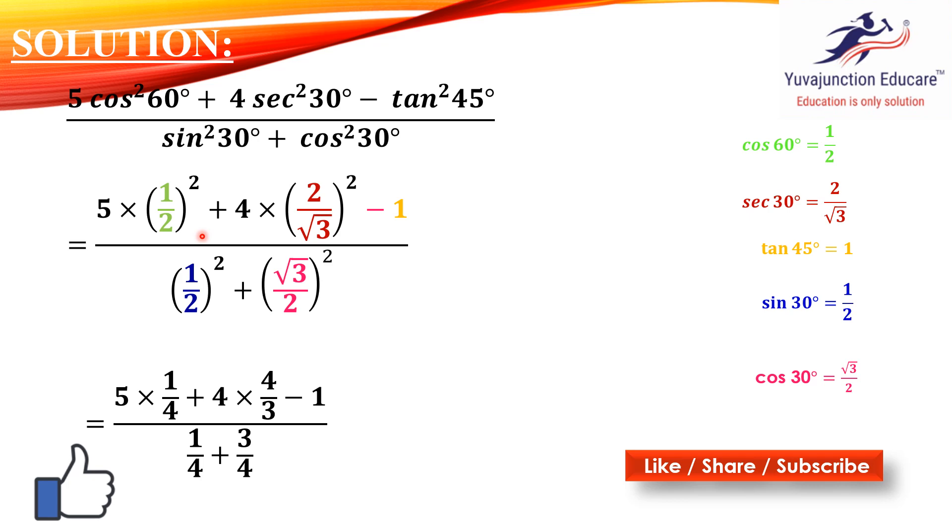Here 5 into (1/2)² is 5/4, plus 4 into (2/√3)² is 16/3, minus 1, divided by... the denominator, (1/2)² plus (√3/2)², that's 1/4 plus 3/4, which is 4. So we got this.